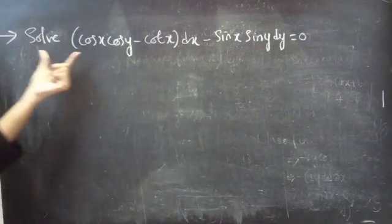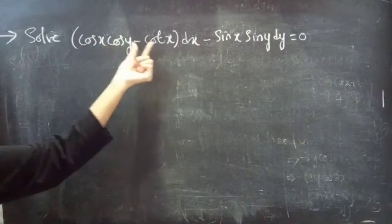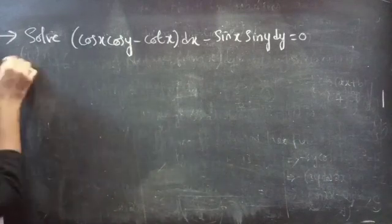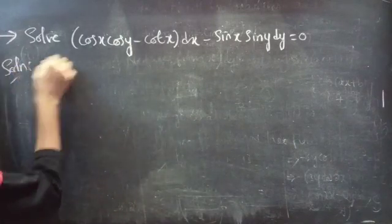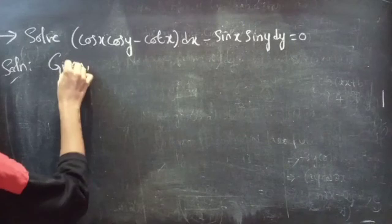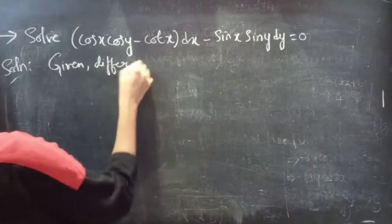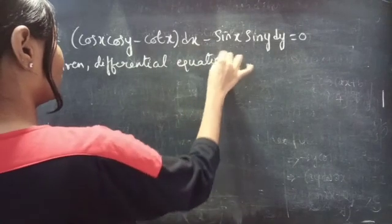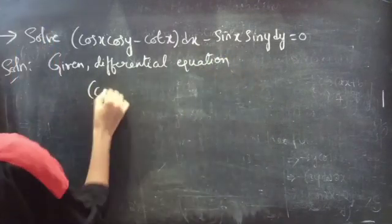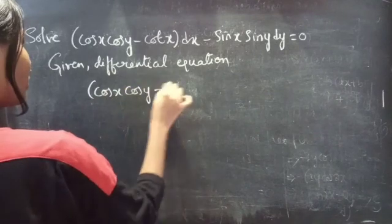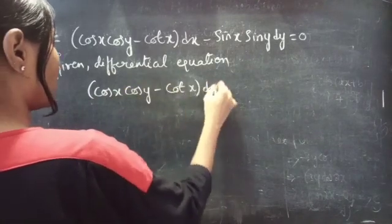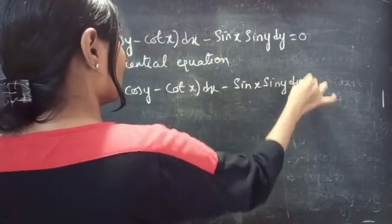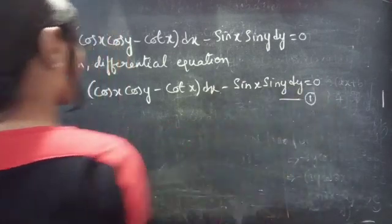Problem: solve cos(x)cos(y) minus cot(x) dx minus sin(x)sin(y) dy equals 0. Solution: given differential equation cos(x) into cos(y) minus cot(x) dx minus sin(x)sin(y) dy equals to 0. Consider it as equation number 1.